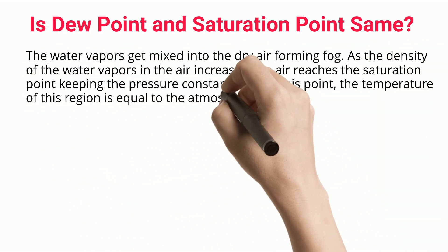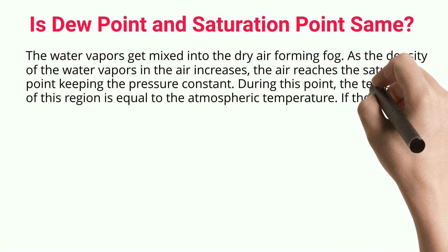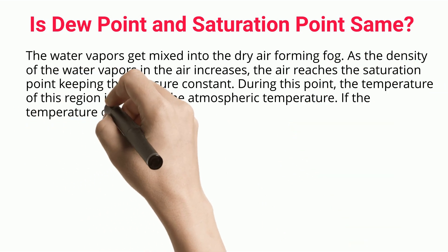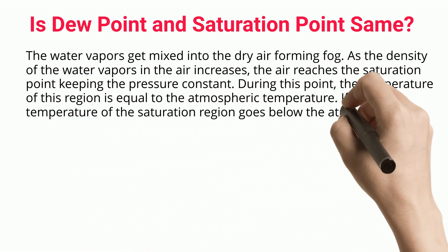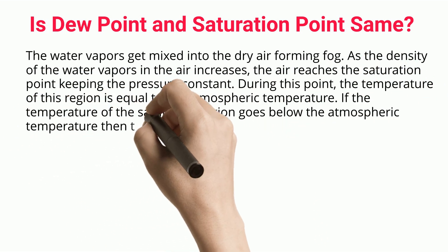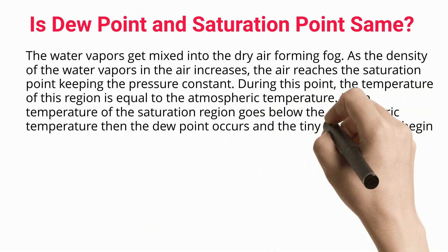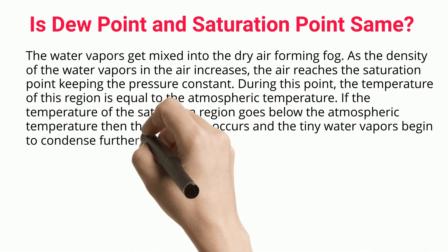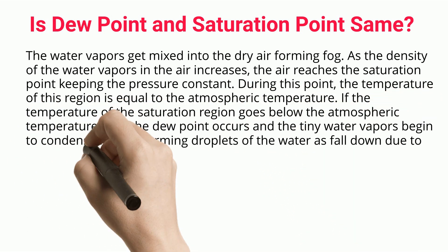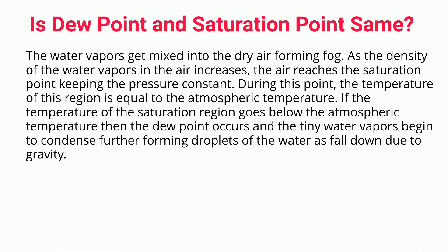As the density of water vapors in the air increases, the air reaches the saturation point. Keeping pressure constant, the temperature of this region is equal to the atmospheric temperature. If the temperature of the saturation region goes below the atmospheric temperature, the dew point occurs and the tiny water vapors begin to condense further, forming droplets of water that fall down due to gravity.